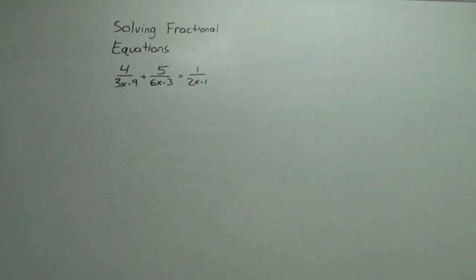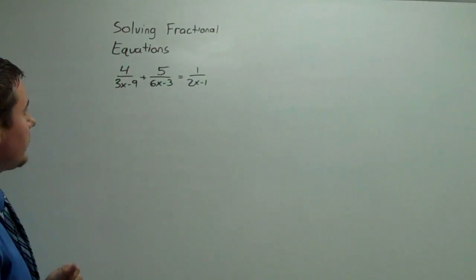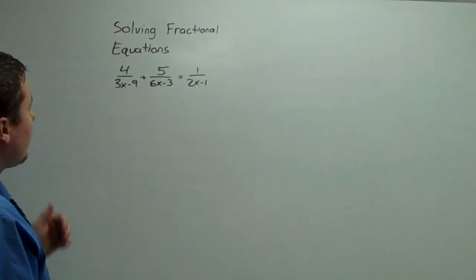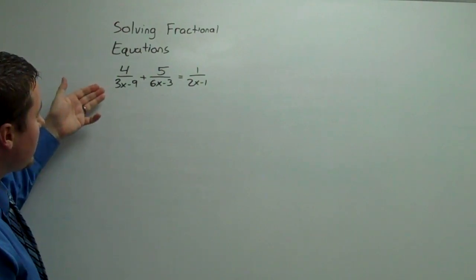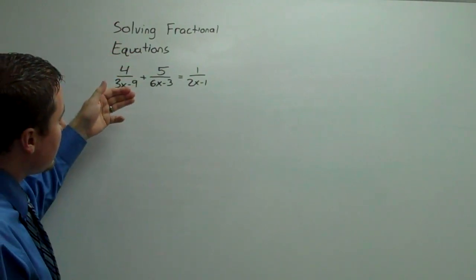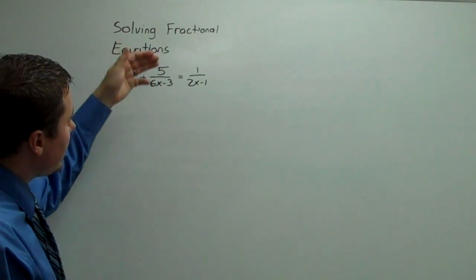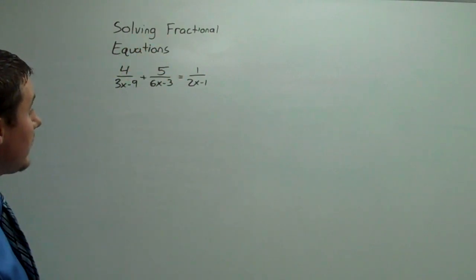For our next problem we're going to solve a fractional equation. We have 4 over 3x minus 9, plus 5 over 6x minus 3, equals 1 over 2x minus 1.